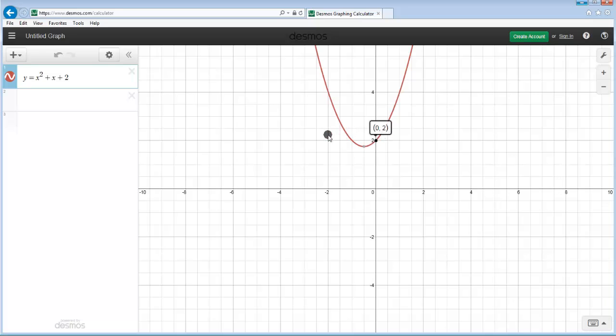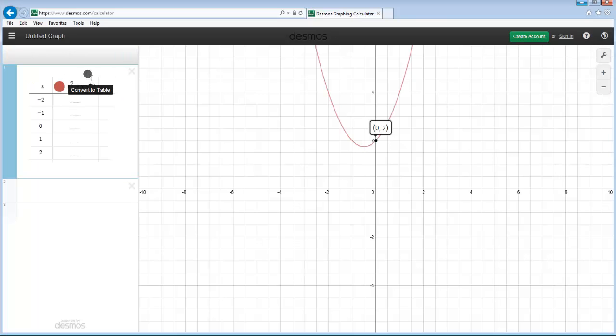You could also check out the table as well. If you click this little gear here, it says edit list. And then this button right here that says convert to table, click that. And then you could see all the x values that matches up with the y values here on the right. And remember that, to look for our y-intercept, that's always going to be when the x is 0.